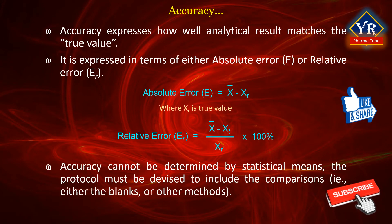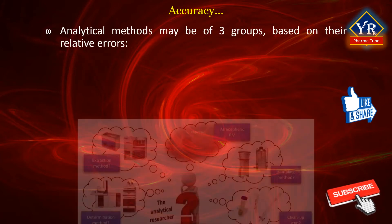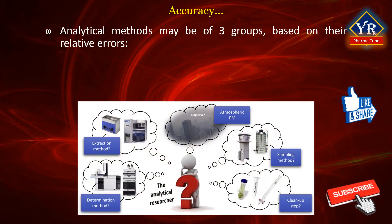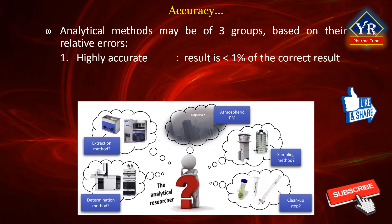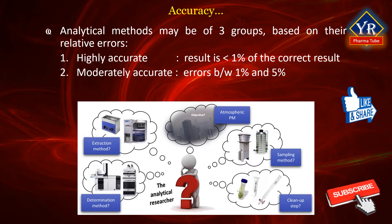Furthermore, accuracy cannot be determined by statistical means. The test protocol must be devised to include necessary comparisons, that is either blanks or other methods. Analytical methods are often divided into three groups based on the magnitude of their relative errors. When an experimental result is within one percent of the correct result, the analytical method is highly accurate. If relative errors are between one and five percent, the method is moderately accurate, and methods of low accuracy produce relative errors greater than five percent.